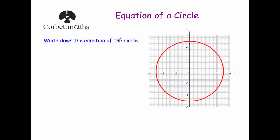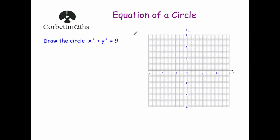Next question: write down the equation of this circle. The radius from the center to the edge is equal to 5. Because the center is the origin, the first part is x² + y², and it's equal to the radius squared. 5² is 25, so the equation is x² + y² = 25. You could also write x² + y² = 5² if you wanted — it's really up to you.